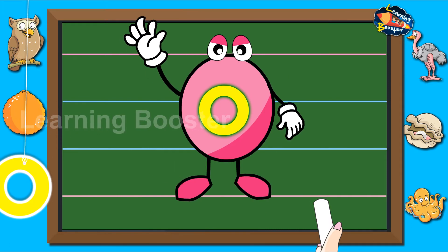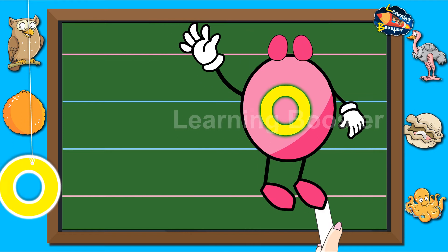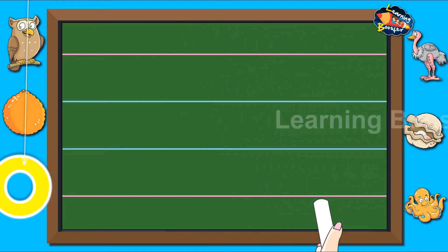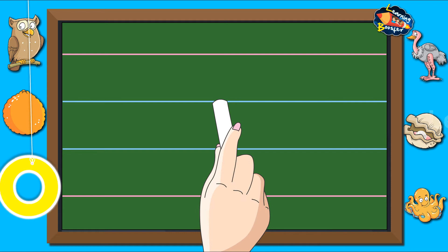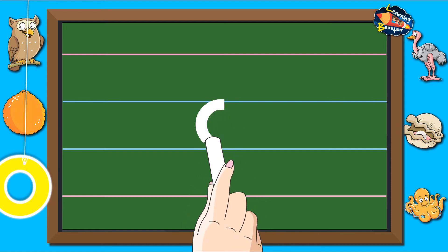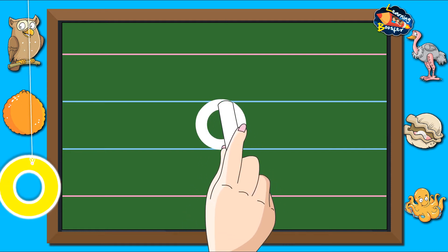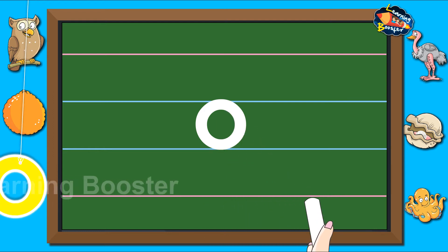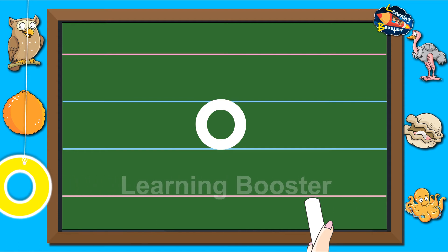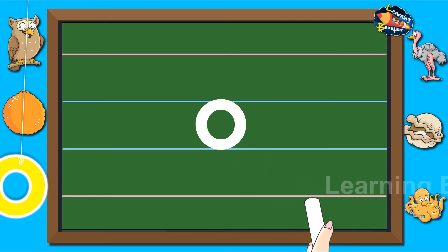we will learn to write small letter O. Start from the waistline and make a circle to the left, touching the baseline and ending at the waistline. Let us look at it once more. One small circle makes letter O.